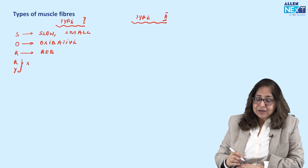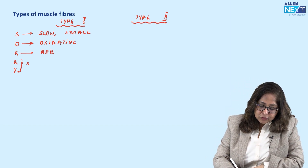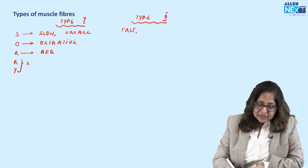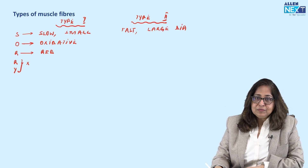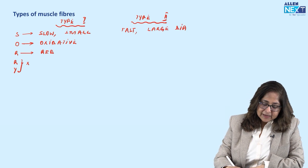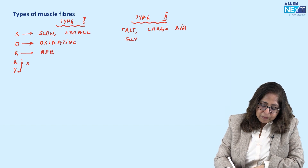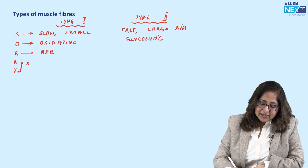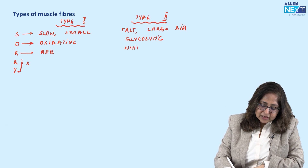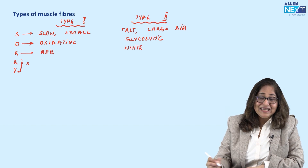If type 1 is a slow fiber, then type 2 is a fast fiber. If type 1 is a small diameter fiber, type 2 is a large diameter fiber. If type 1 has oxidative metabolism, type 2 has anaerobic or glycolytic metabolism. If type 1 is red, then type 2 is a white fiber.